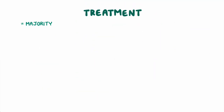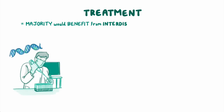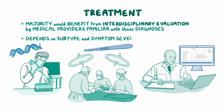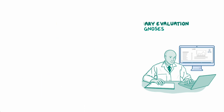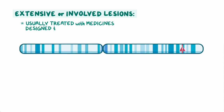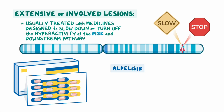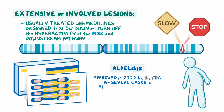The majority of people with PROS would benefit from interdisciplinary evaluation by medical providers familiar with these diagnoses. The treatment of PROS depends on the subtype and the symptom severity. Extensive or involved lesions are usually treated with medicines designed to slow down or turn off the hyperactivity of the PI3K and the downstream pathway. Alpelisib was approved in 2022 by the FDA as a treatment for severe cases of PROS in adults and children two years of age or older.